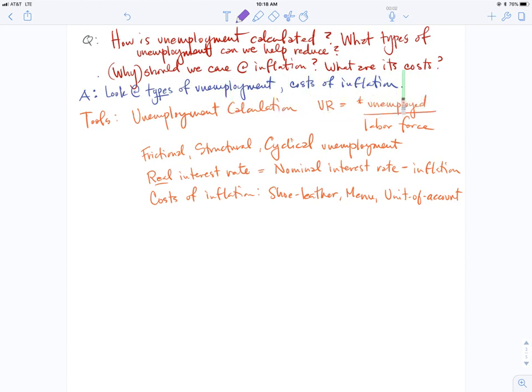We talked about the different costs of inflation, who might be hurt and helped with inflation. We're understanding the measurement but also the harm done by unemployment and inflation. We looked at the types of unemployment, the cost of inflation, the tools in chapter 8: unemployment calculation and the characterization of the different types of unemployment.